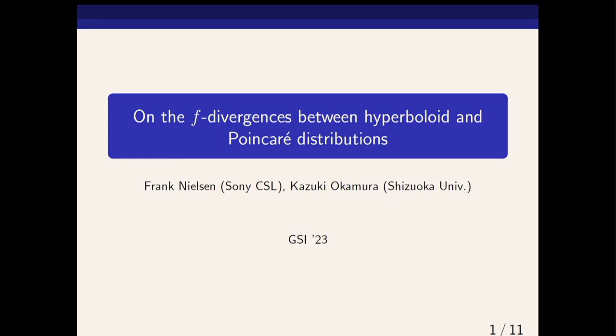This talk is on the f-divergences between hyperboloid and Poincaré distributions. First, I would like to thank Koichi Tojo for swapping with me to avoid three talks in a row. Tojo explained a lot about the Poincaré distribution as background, so I will be able to proceed very smoothly.